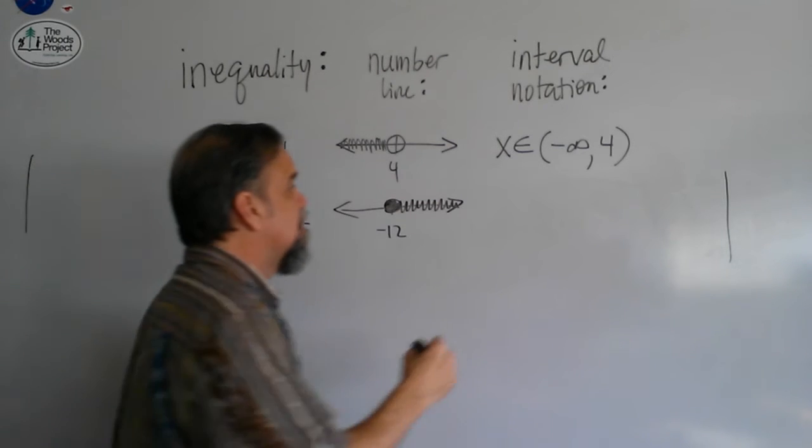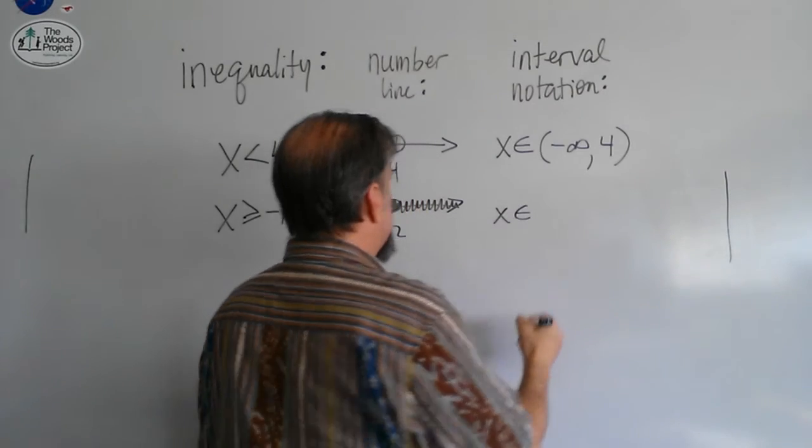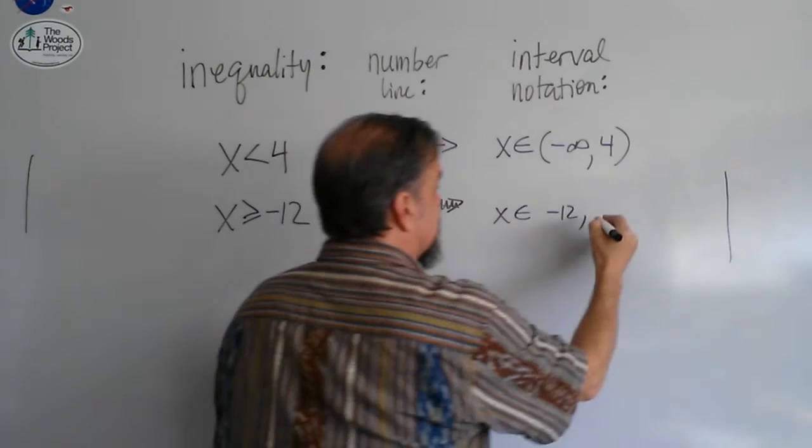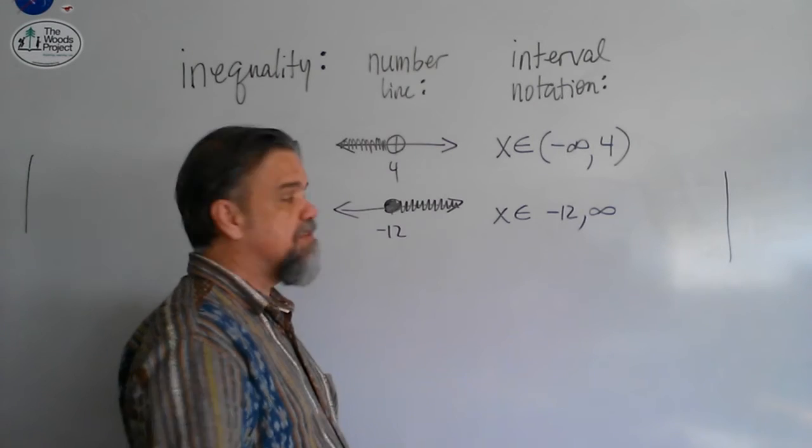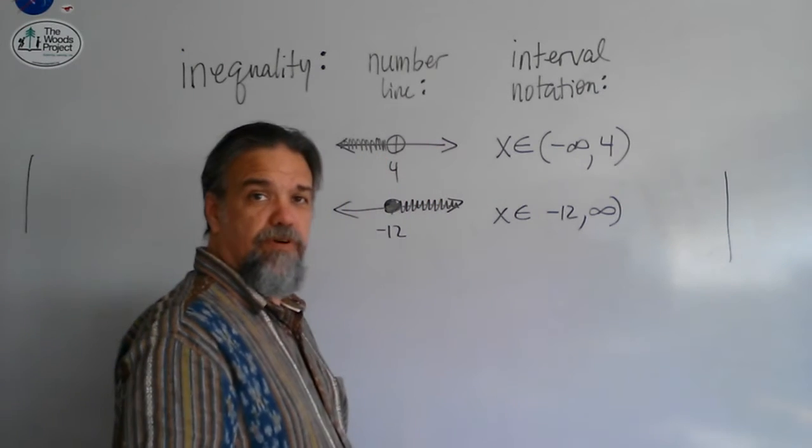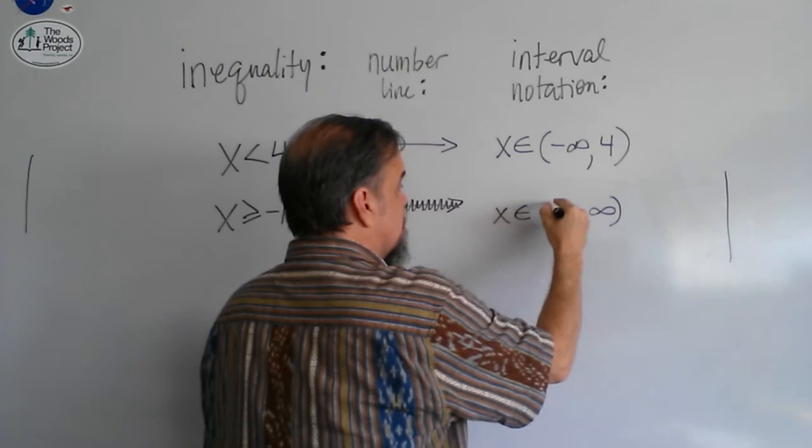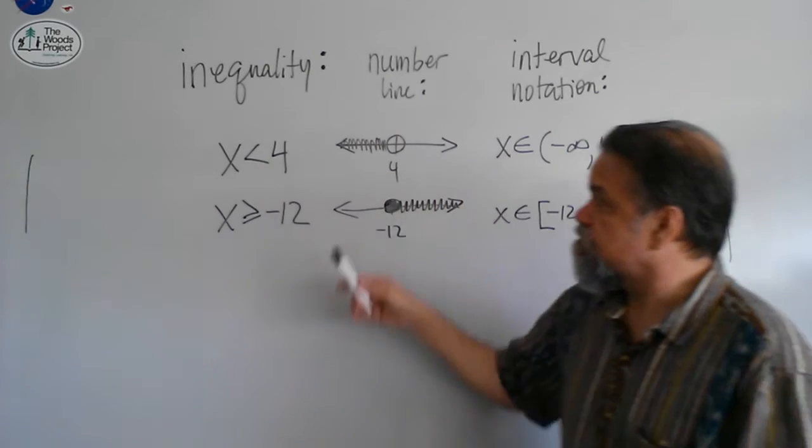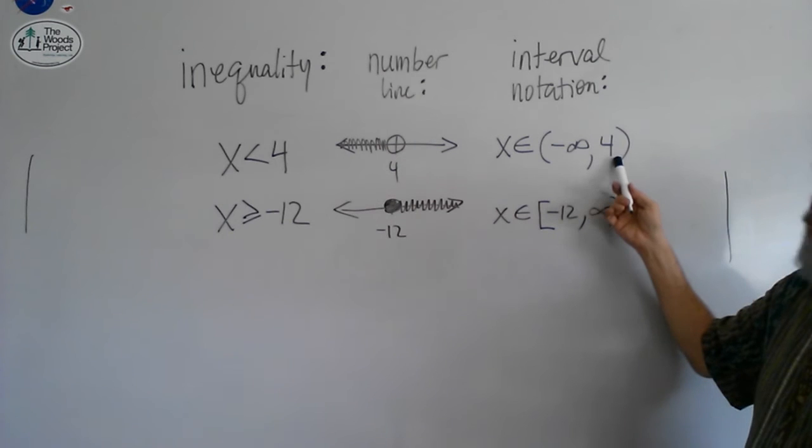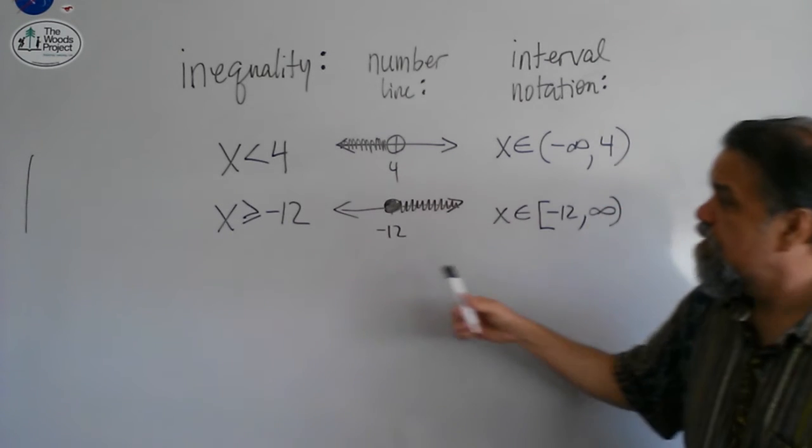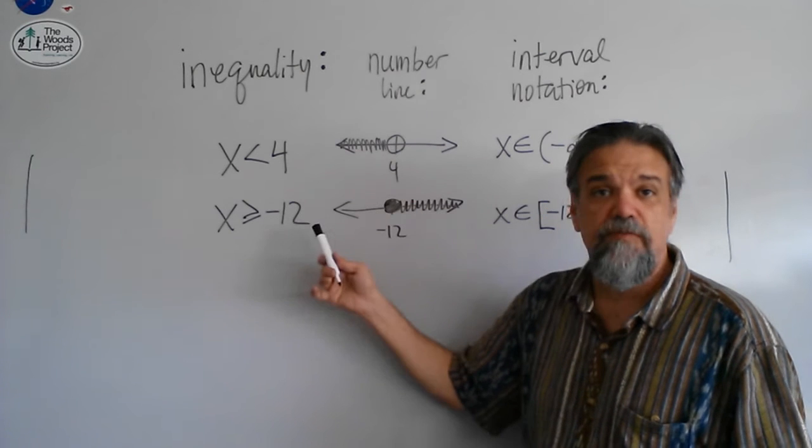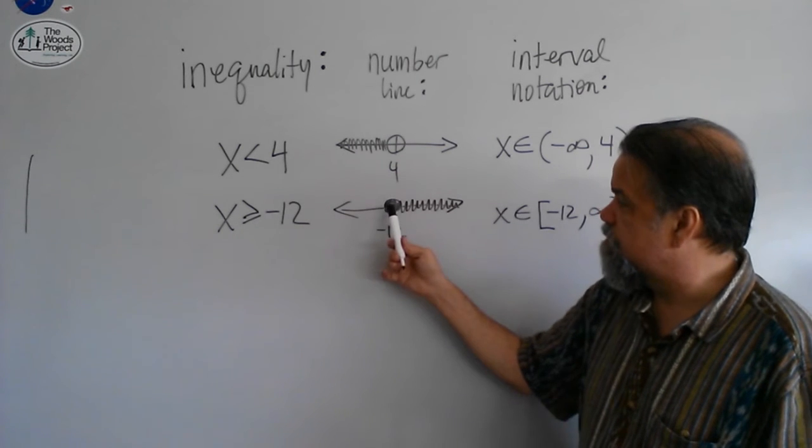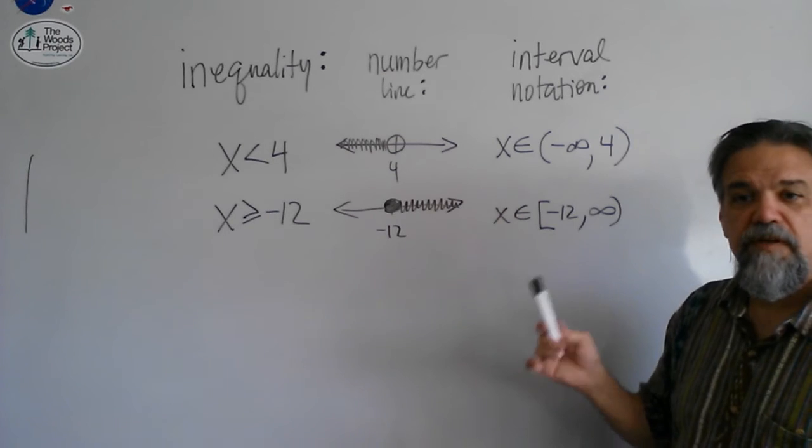So now, how do I write this as an interval? I would say x is in the interval from negative 12 to positive infinity. And this time, instead of parentheses, I'm going to put a parenthesis here on infinity, but for negative 12, it includes negative 12, so I'm going to put a bracket there. So, on the first one, when 4 wasn't part of my solution set, I put a parenthesis there to say 4 is not included, but on this one, where negative 12 is part of my solution set, I put a bracket there to say, yes, make that part of it. So, the or equal to corresponds with the filled in dot, corresponds with the bracket. Let's look at another one.